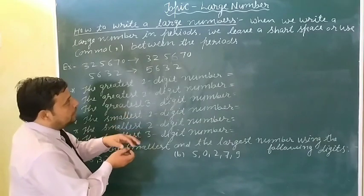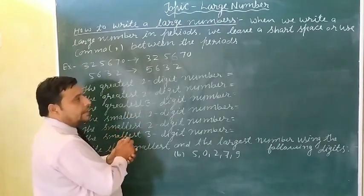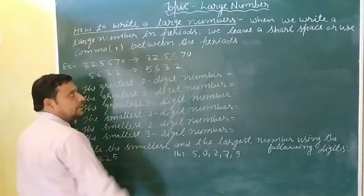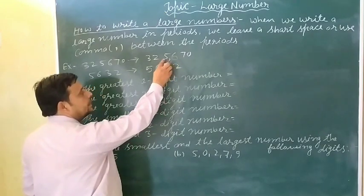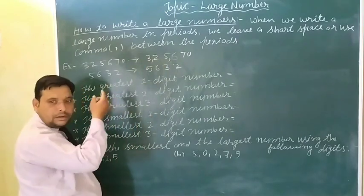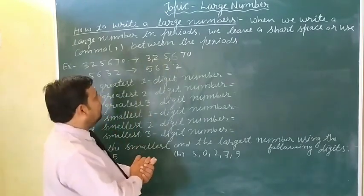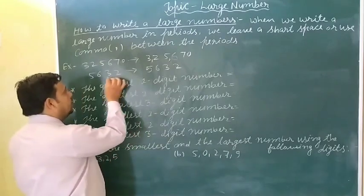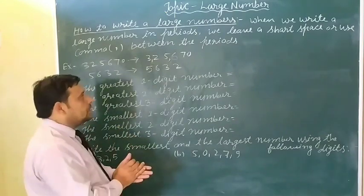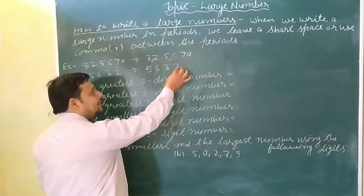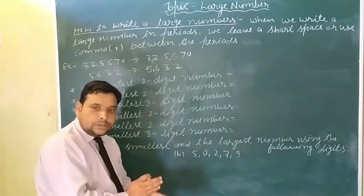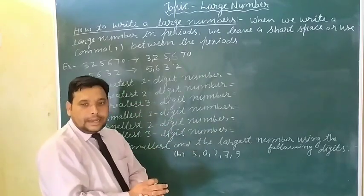Periods or commas — short space rakhna hai. One, ten, hundred — space rakhna hai. Then next comma at ten thousand place. Next comma at ten lakh place.